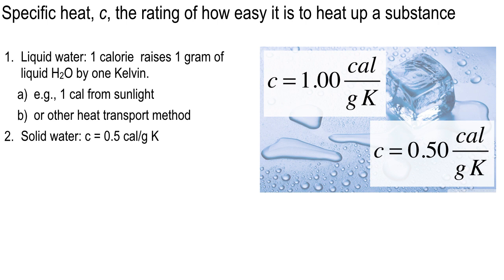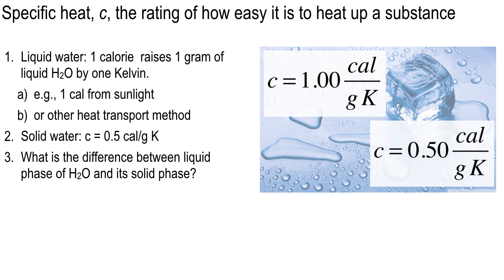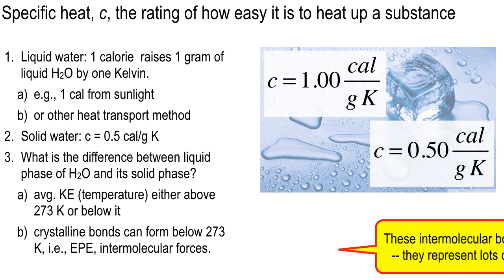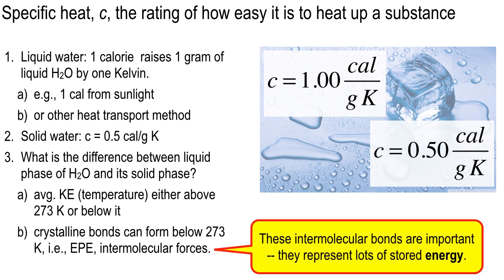Between liquid and solid is the phase transition. It's because of the crystalline bonds that can form below the freezing point of liquid water, 273 Kelvin, and are not quite able to form and stay formed above that temperature. I mentioned that it is electromagnetic potential energy, and it actually represents a lot of energy stored in the crystal lattice. And when you melt it, all that energy is released, or extracted.